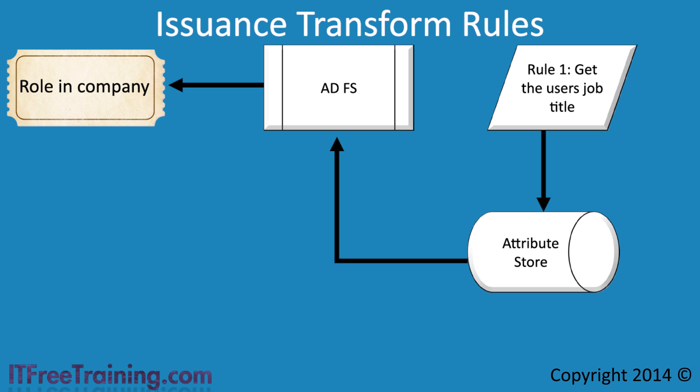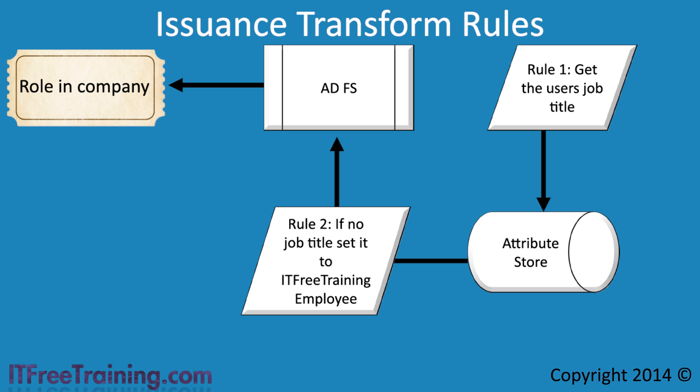When you contact HighCostTraining, they tell you the application is hard-coded to expect a job title in the claim and it cannot be changed. They also tell you that they do not use this information, so you can set the value to whatever you like. It is a lot of effort to make sure all the employees' job titles are set correctly, and the problem needs to be fixed quickly. So to fix the problem, a second rule is created. This rule states that if the job title is blank, set it to ITFreeTrainingEmployee. This way, a value is always set in the claim for the job title. You can see how issuance transform rules can be used to determine what information is used in the claim, but also put it in the format required — taking raw data and transforming it to the required state. This is a very powerful feature of Active Directory Federation Services.